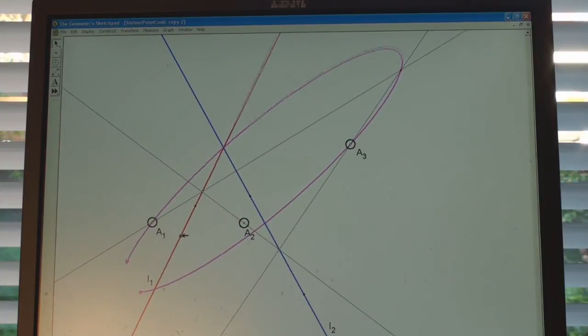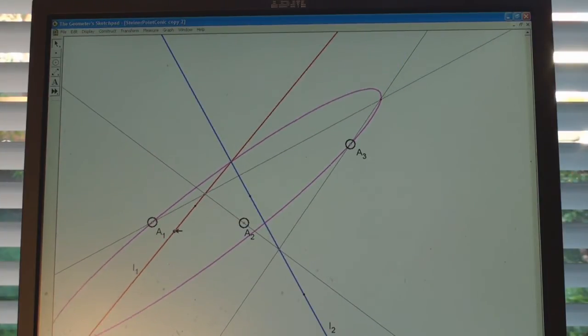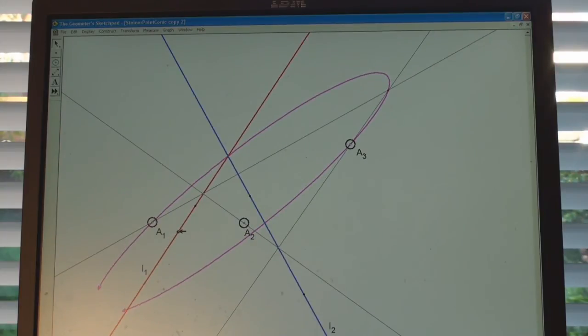This is called a point conic. So we're obtaining a point conic as the result of a projectivity between two pencils of lines, between A1 and A3, and looking where the common intersection point traverses as we go through all the pencils at A1.